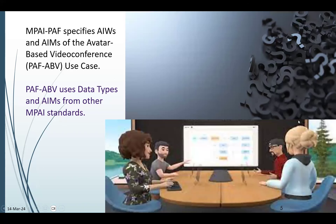Also included in the links is a detailed description of the MPI PATH use case, which is the avatar-based videoconference described in the following slides, along with all the AI modules and AI workflows it involves. This use case incorporates data types and AI modules from other MPI standards, which ensures that the implementation of avatars in videoconferencing is not only standardized within this specific domain, but is also compatible with other MPI standards.